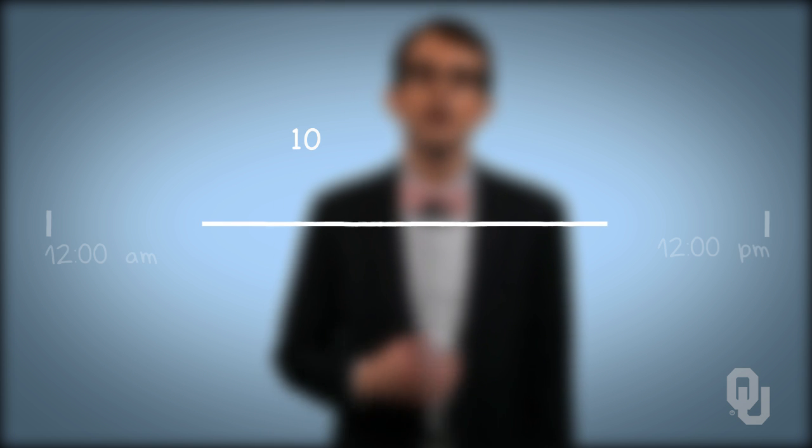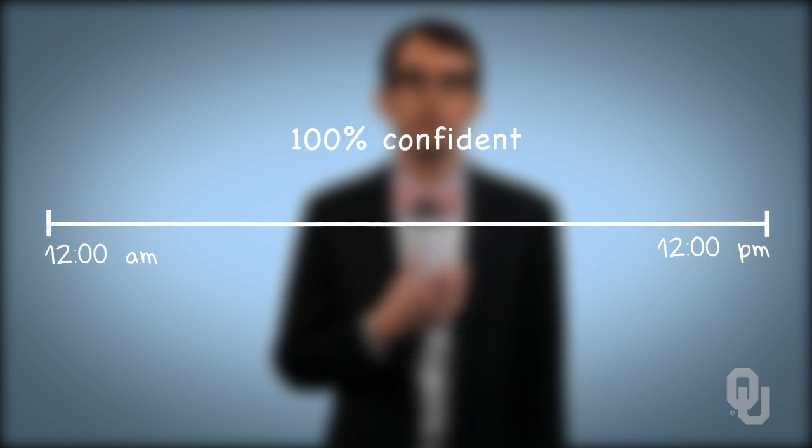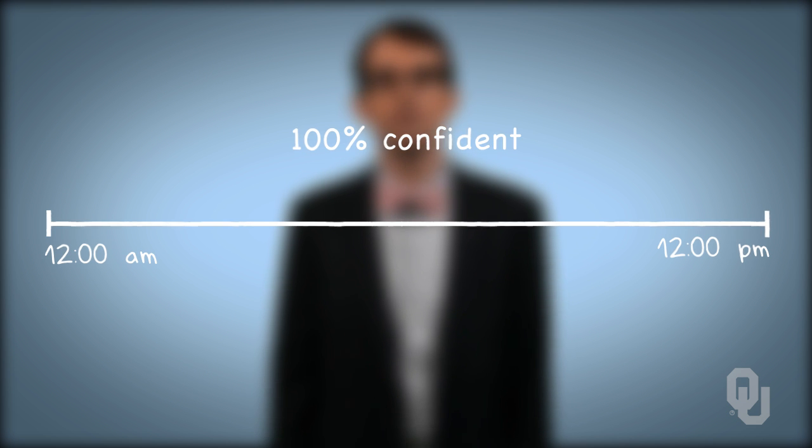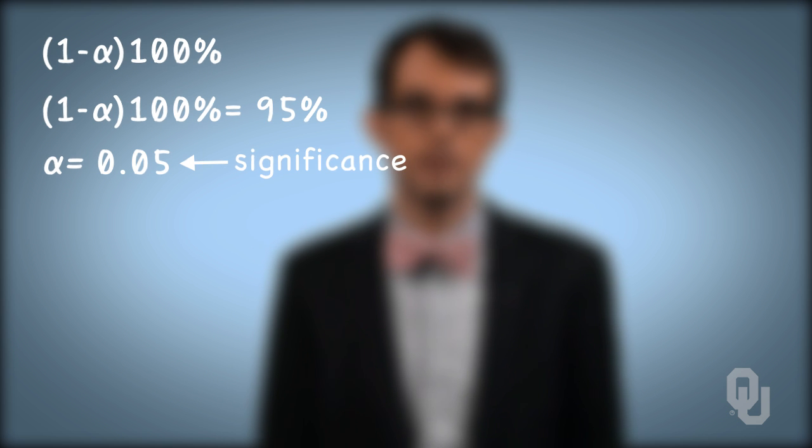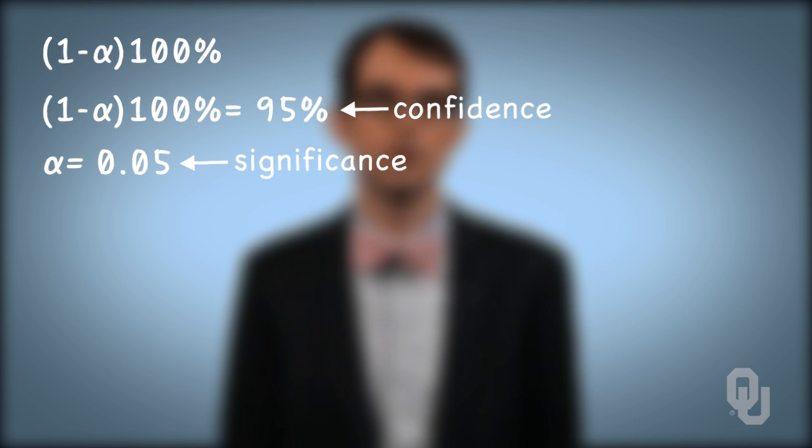Why not a 100% confidence interval? The interval would be too wide to be usable. For example, I'm 100% confident that the sun will rise between midnight and noon — with that wide a confidence interval, I essentially provide no useful information. The typical notation for a confidence interval is a (1 minus alpha) times 100% confidence interval. For example, for a 95% confidence interval, alpha equals 0.05. The value of alpha is often referred to as the significance level — in this case, 95% confidence, or 0.05 significance.